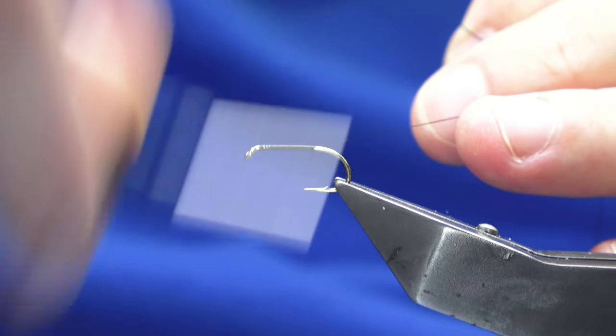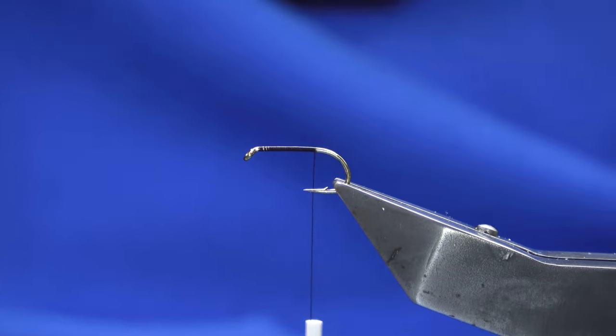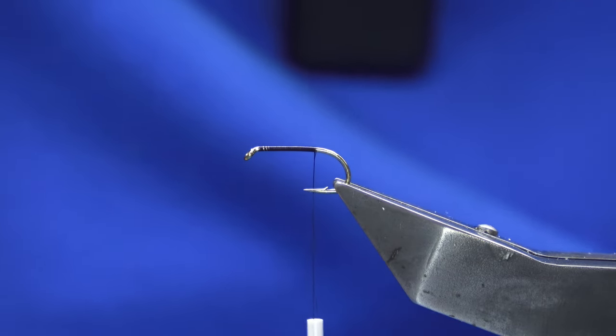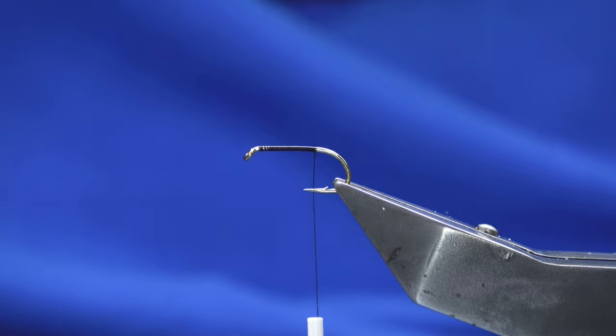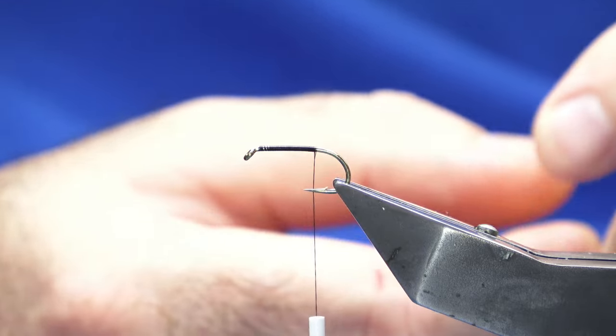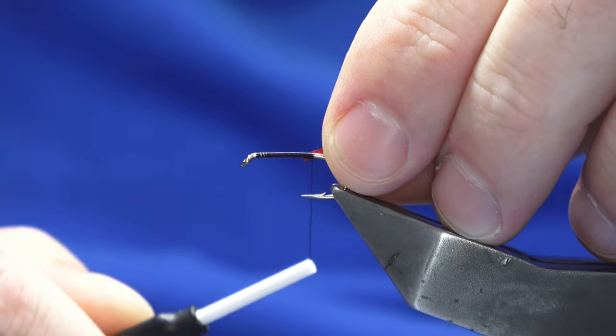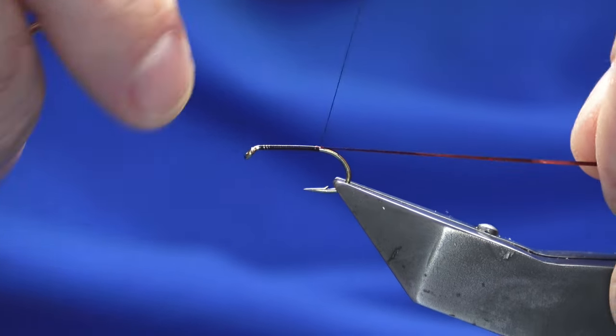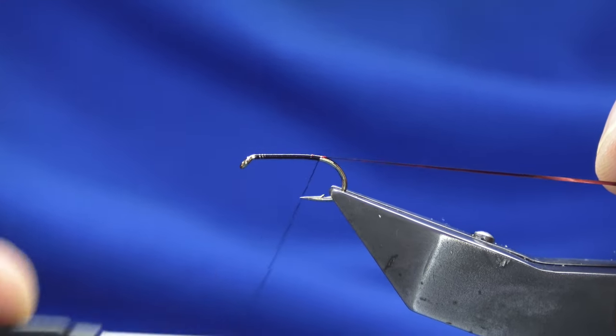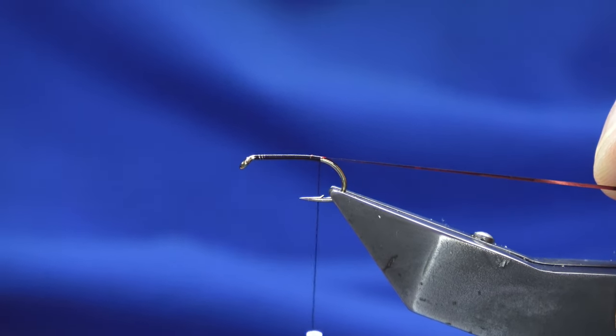Work the thread down past the point of the hook and remove the waste tag. At the back, add a tag of red holographic tinsel which we'll also use for the cheeks. I'm going to work the thread down to the barb.